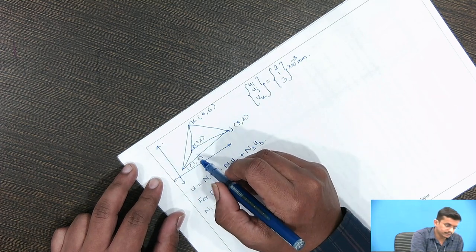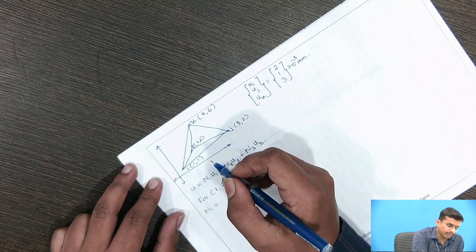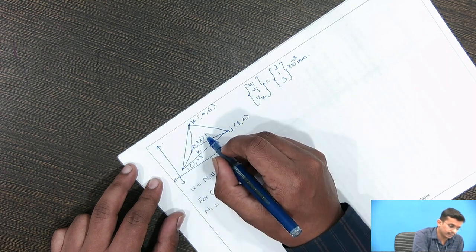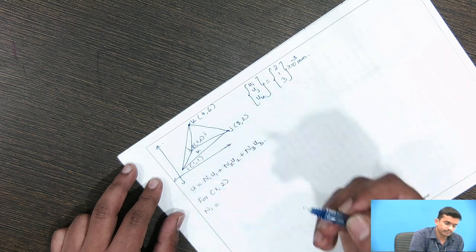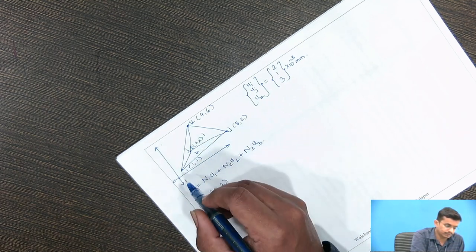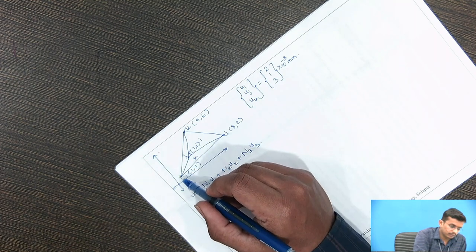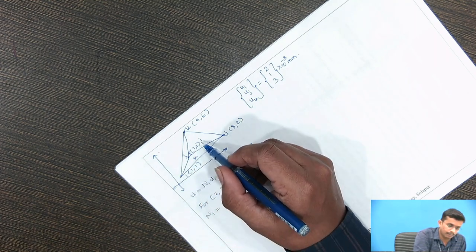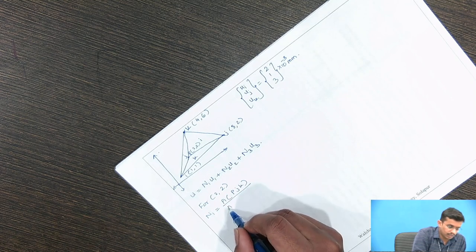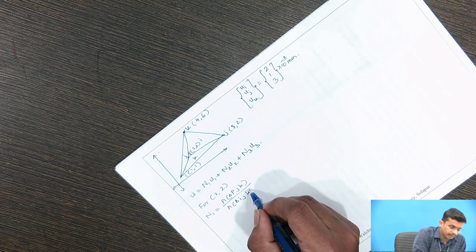There are three triangles. We name them by the opposite vertex: triangle opposite to k is triangle k, opposite to i is triangle i, and opposite to j is triangle j. To calculate the shape function n1 with respect to point i, we take the triangle opposite to it: n1 = area of triangle pjk divided by area of triangle ijk.